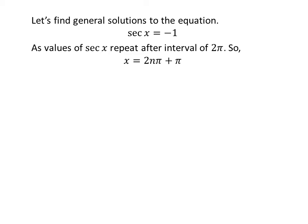So the general solution is 2nπ plus π where n is an integer. Further simplification gives us the general solution is (2n + 1)π.